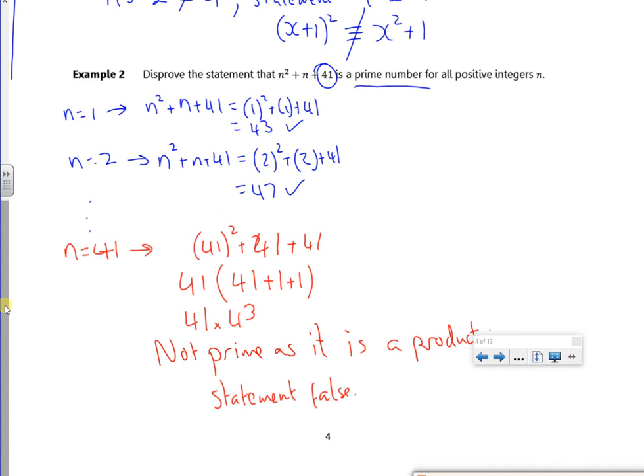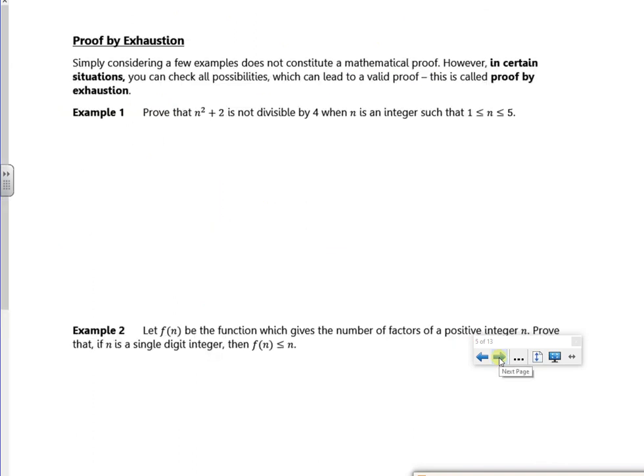Let's try proof by exhaustion. So proof by exhaustion is on your next page. So it says here, in certain situations, you can check all possibilities. Right. Well, if you look here, it tells us we're only going to use one, two, three, four, and five. So that's kind of quite nice to use. So if you use n=1, I get 1²+2 is three. So that's not divisible by four.